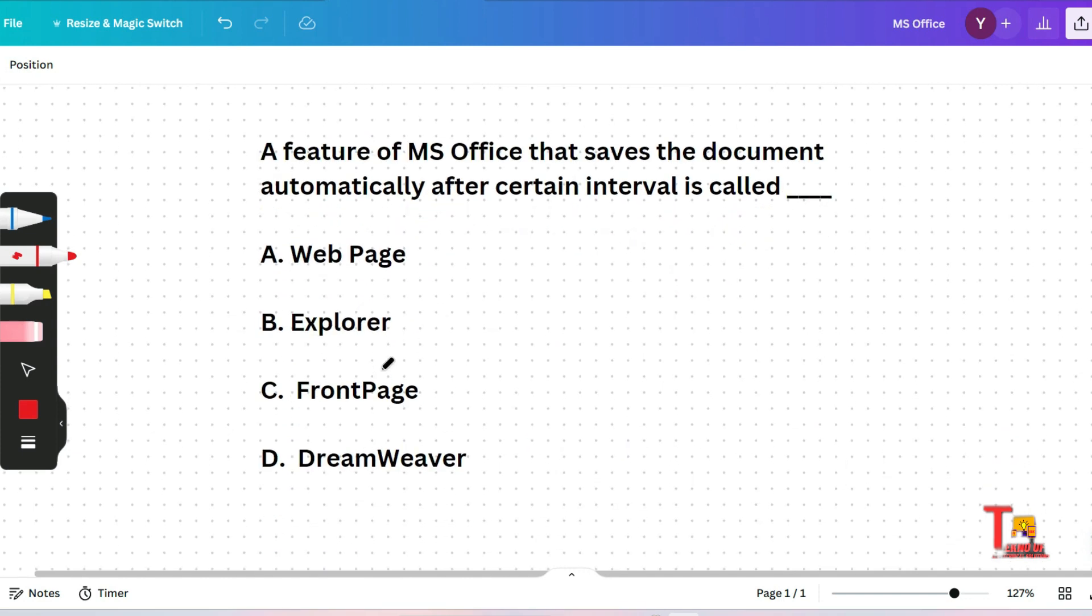The next question is: a feature of MS Office that saves the document automatically after certain interval is called web page, explorer, front page, or DreamWeaver. This might be a tricky question because the name itself does not explain the answer. The correct answer will be in this case FrontPage. Sometimes logic does not work, so you have to remember the actual option.